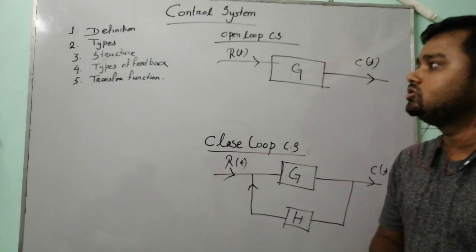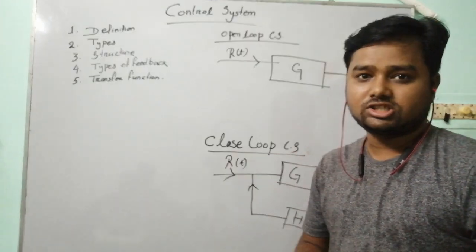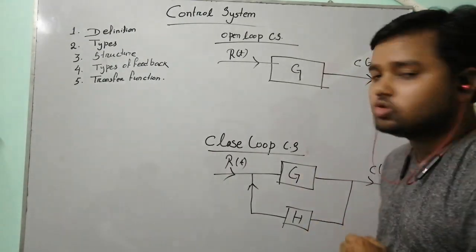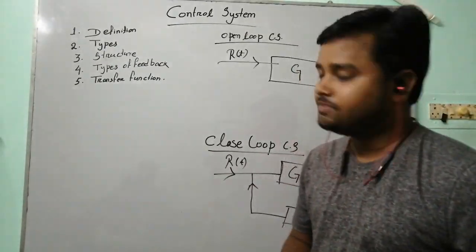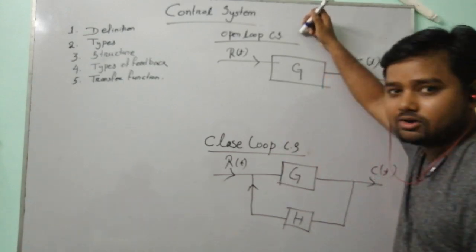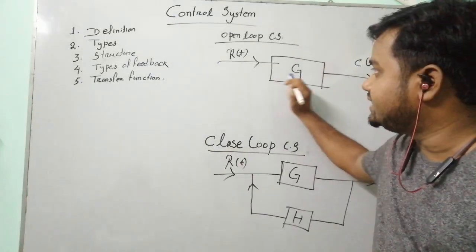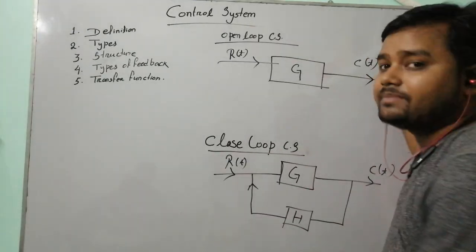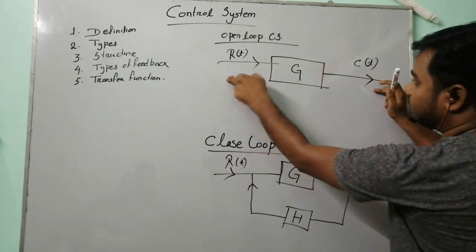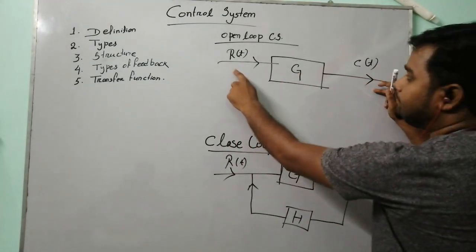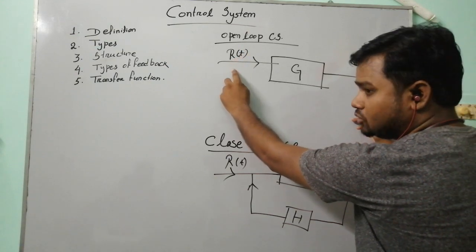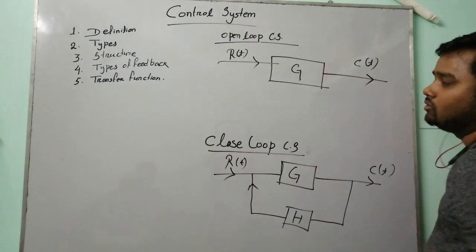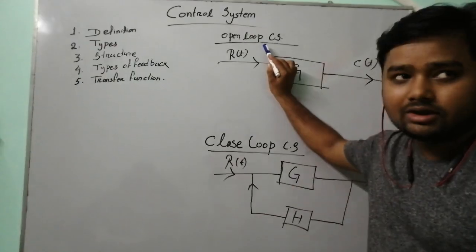Now we have to see the structure of the control system. There are two types: open loop and closed loop. In the open loop control system, there is a gain part in the middle, input side r(t), output side c(t). Only the output depends upon the input — the input side has no effect from the output. There is no feedback path, so it is an open loop control system.